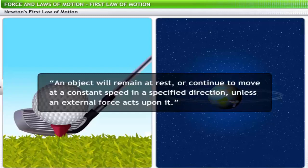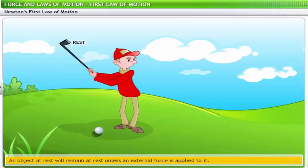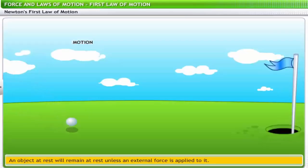First, an object at rest will remain at rest unless an external force is applied to it — all objects at rest conform to this. For example, on a golf course a ball on a tee remains at rest until the golfer hits it. When the ball is hit, a force is applied, setting the ball in motion.